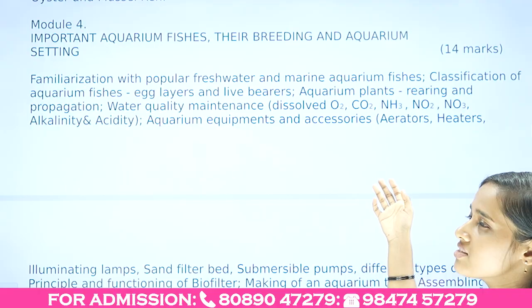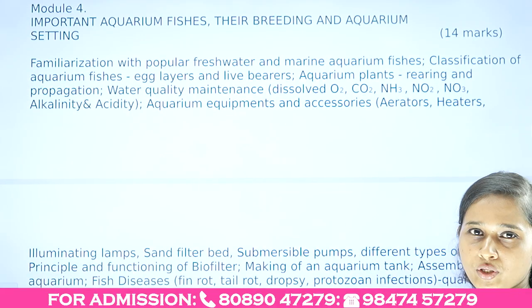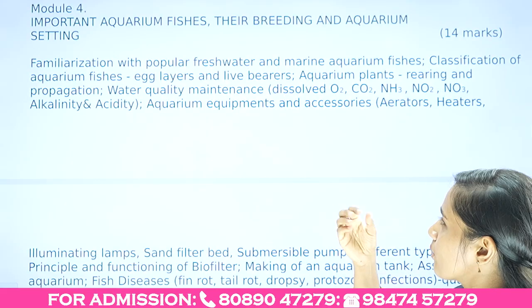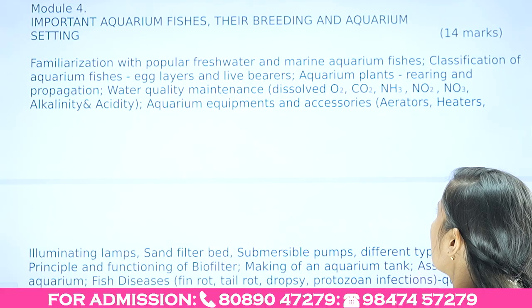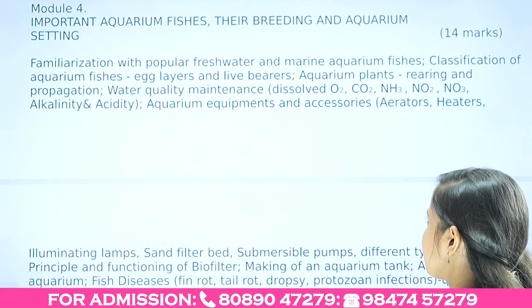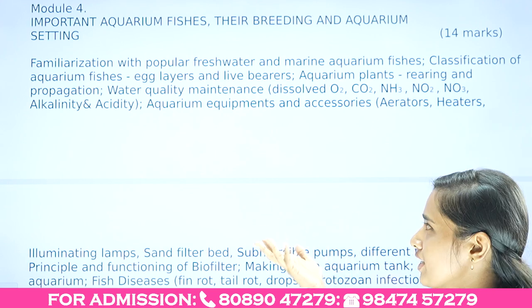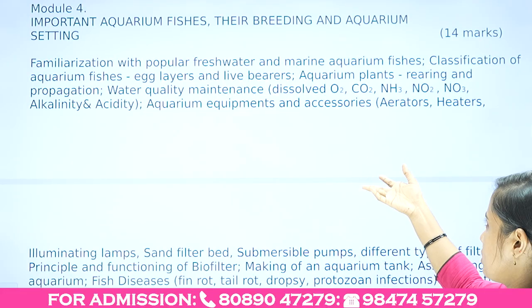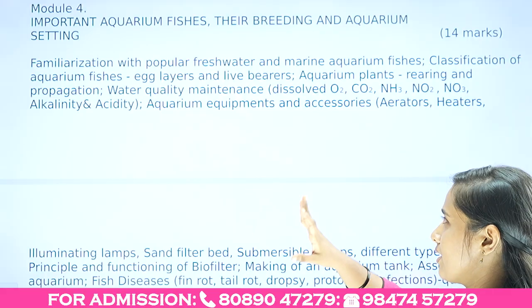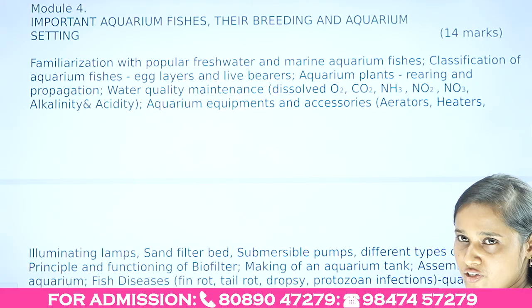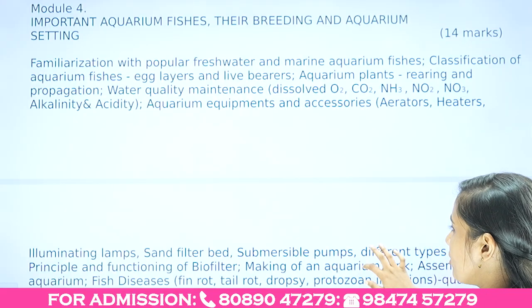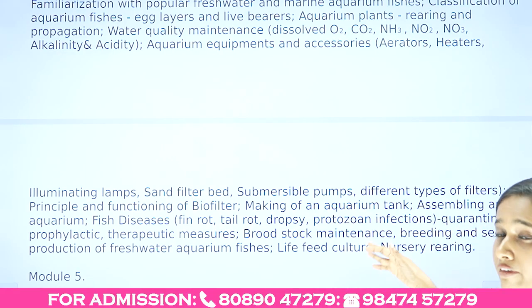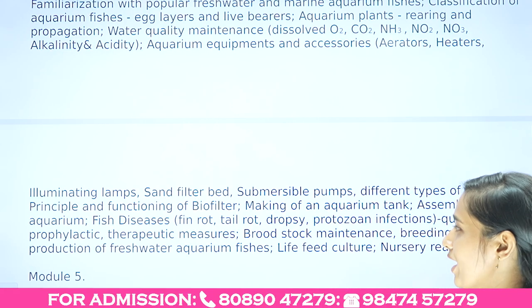Module 4 covers familiarization with freshwater as well as marine aquarium fishes, classification of aquarium fishes and plants, aquarium setup, rearing and propagation, and water quality maintenance — including dissolved oxygen, carbon dioxide, ammonia, nitrite, acidity, and other parameters. Aquarium accessories such as heaters, illuminating lamps, sand filter beds, submersible pumps, different types of filters, and biofilters including their principles and functioning are also covered.